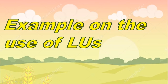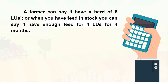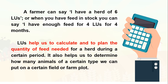What are examples of the use of livestock units? A farmer can say, 'I have a herd of 6 LUs,' or when you have feed in stock, you can say, 'I have enough feed for 4 LUs and for 4 months.' LUs help us calculate and plan the quantity of feed needed for a herd during a certain period, and also help us determine how many animals of a certain type we can put on a certain field or farm plot.